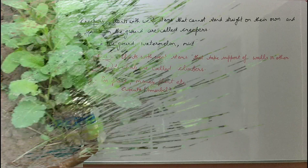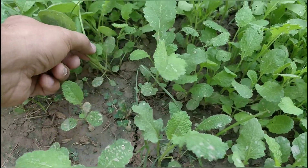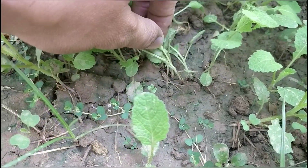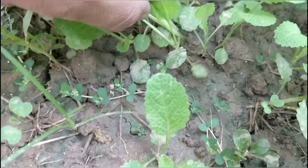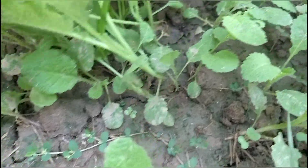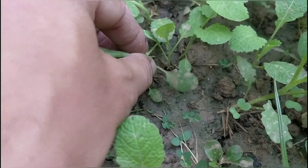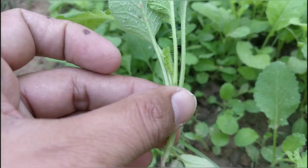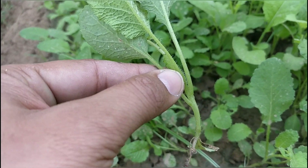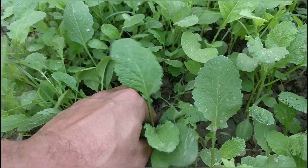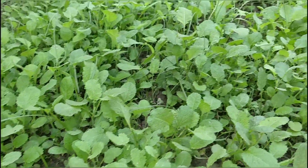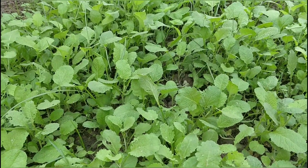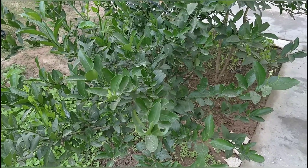Now we will visit the lawn to study various herbs, shrubs, and trees. Here is a herb — it has roots attached in the soil, a very weak green stem, and the branching is present near the base itself. Its lifespan is short — it usually lives for only one or two seasons. Herbs usually grow to approximately one meter.